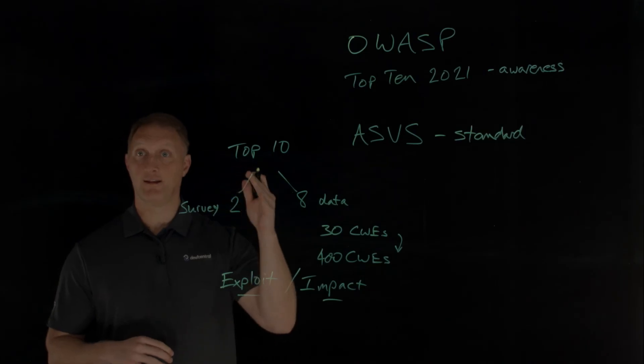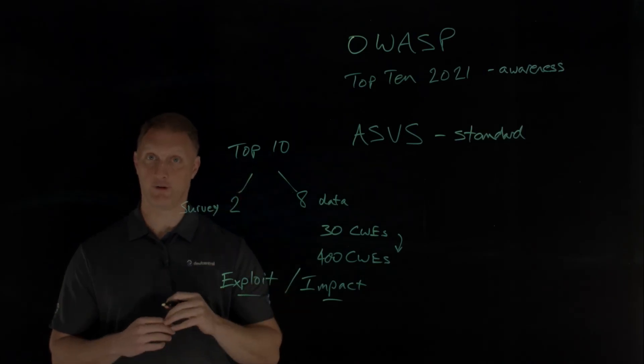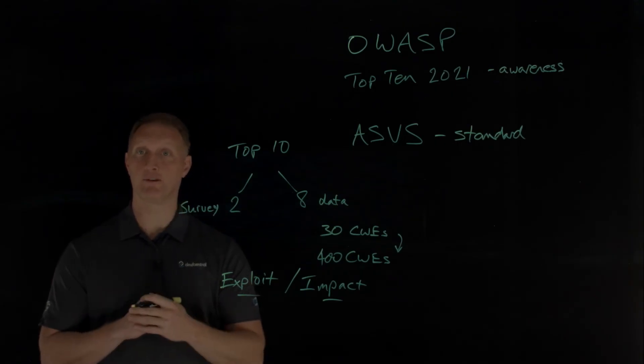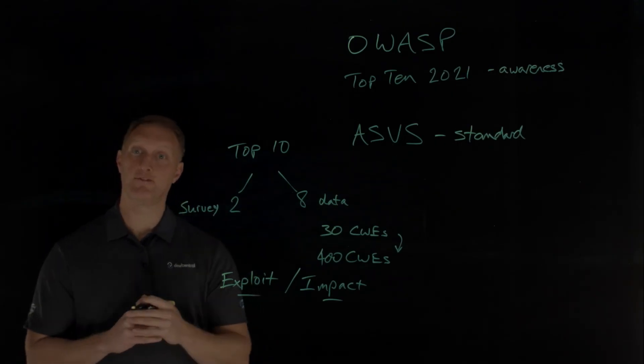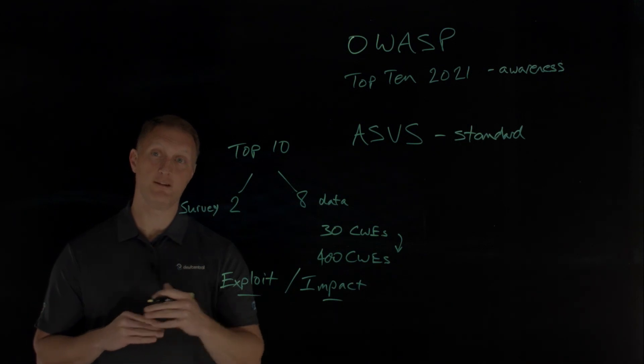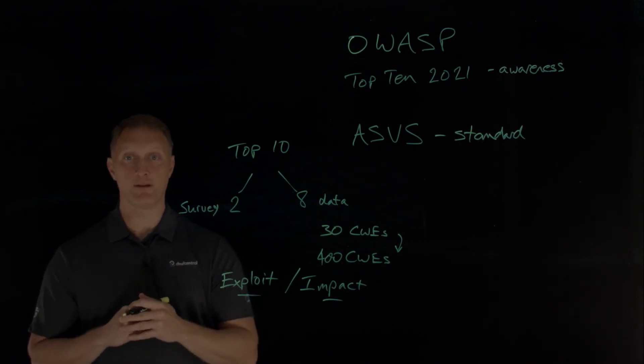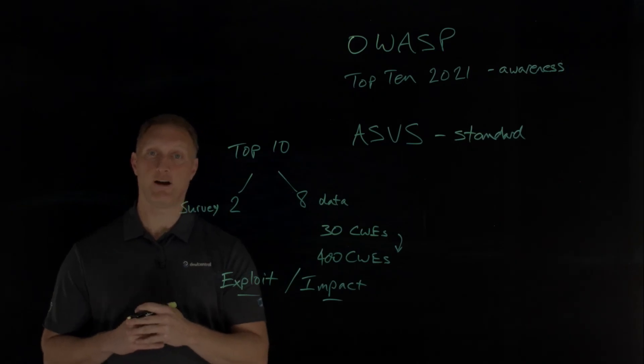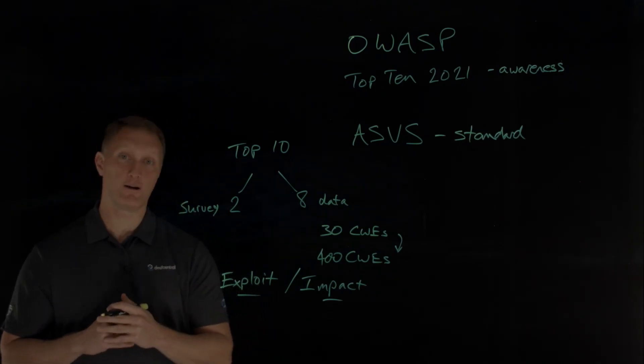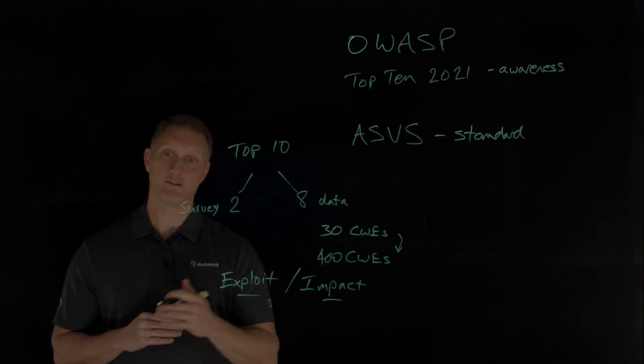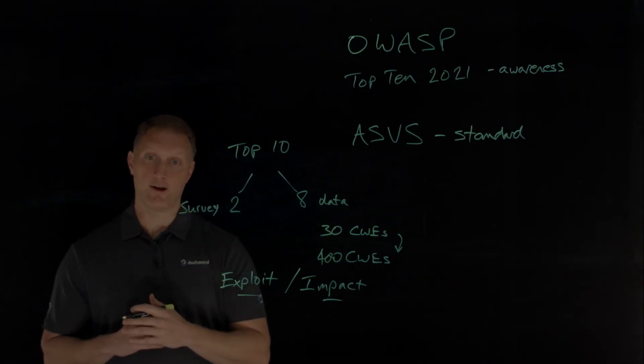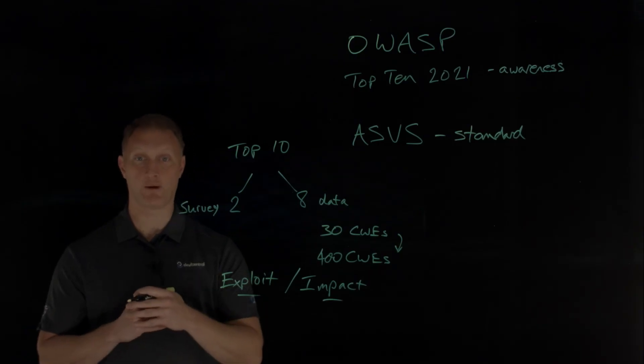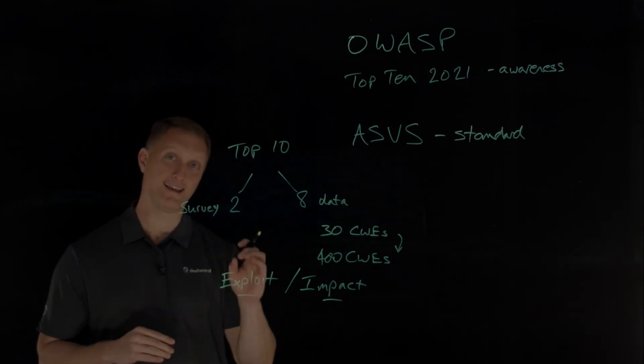Here they are, the top 10. Number one is broken access control. Number two is cryptographic failures. Number three is injection. Number four is insecure design. Number five is security misconfiguration. Number six is vulnerable and outdated components. Number seven is identification and authentication failures. Number eight is software and data integrity failures. Number nine is security logging and monitoring failures. And number 10 is server-side request forgery, also called SSRF.